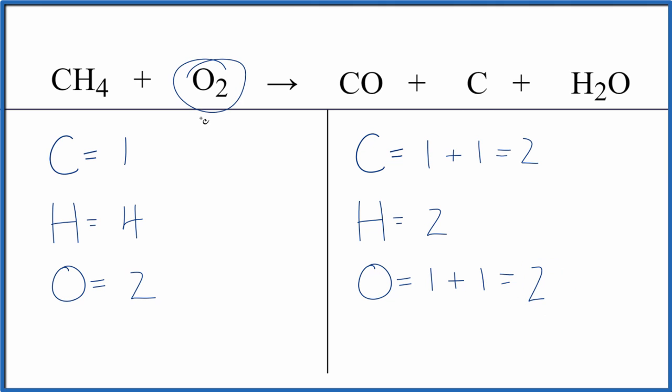Let's leave the oxygen until last. It's by itself, so when we change the coefficient here, it won't change anything else. Why don't we just do the carbon? If we put a two in front of the methane, one times two gives us two of those. And then four times two, that gives us eight hydrogen. We've balanced the carbons.